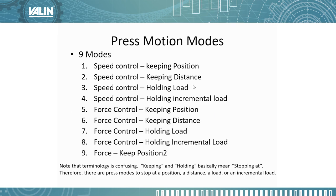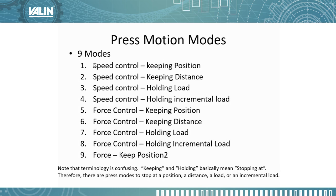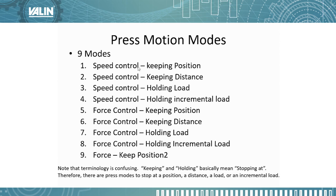There are nine press modes. The terminology can be confusing — 'keeping' and 'holding' basically means stopping at that point. There are press modes to stop at a position, a distance, a load, or an incremental load. The difference between speed control keeping position and force control keeping position is that in speed control keeping position, whatever speed you set for the press mode, it will maintain that speed and the force will vary.